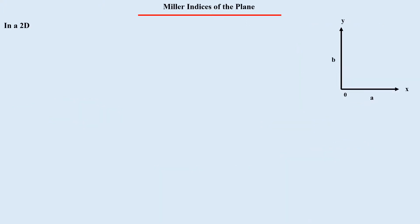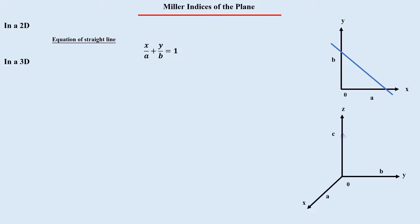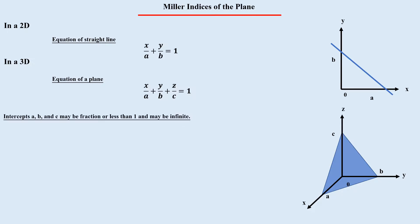In order to understand the Miller indices of a plane in 3D, we consider a straight line in two dimensions which intercepts the axes at a and b. The equation of a straight line is x/a + y/b = 1. Similarly, if a plane in three dimensions intercepts the axes at a, b, and c, the equation is x/a + y/b + z/c = 1. The key point is that these intercept values are not necessarily integers — they can be fractions, infinite, or less than 1.